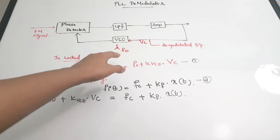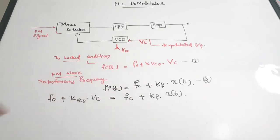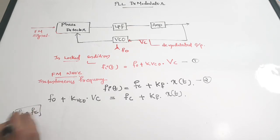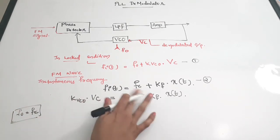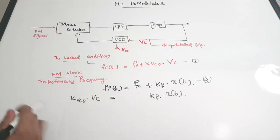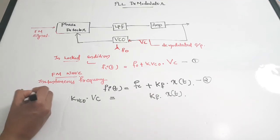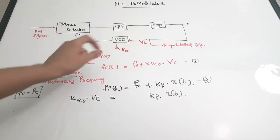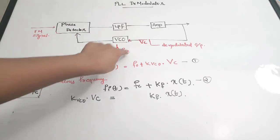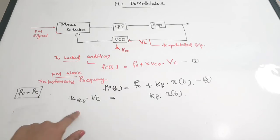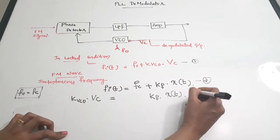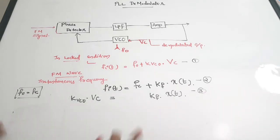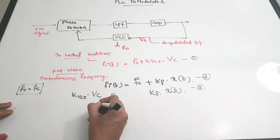Consider that your voltage controlled oscillator is tuned to a frequency F0 equal to FC, that is the carrier frequency. When F0 equals FC, we can cancel these two terms, and we get a simplified relation — Equation 3: KVCO × VC equals KF × X(t).